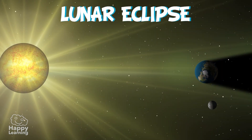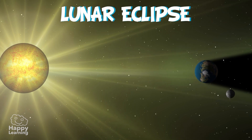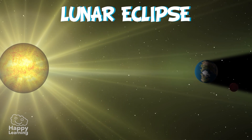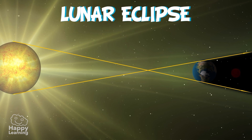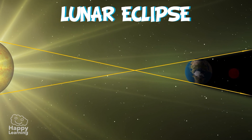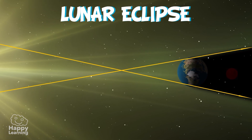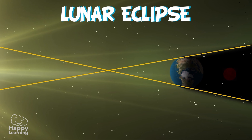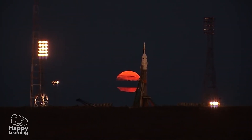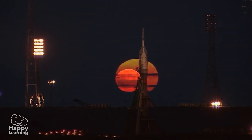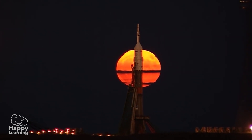The lunar eclipse is when the Earth is situated between the Moon and the Sun, making the Earth block out the Sun's rays, which would be shining on the Moon, creating a shadow and darkening it. This phenomenon allows us to see the Moon in a reddish colour, almost as if it were bleeding.